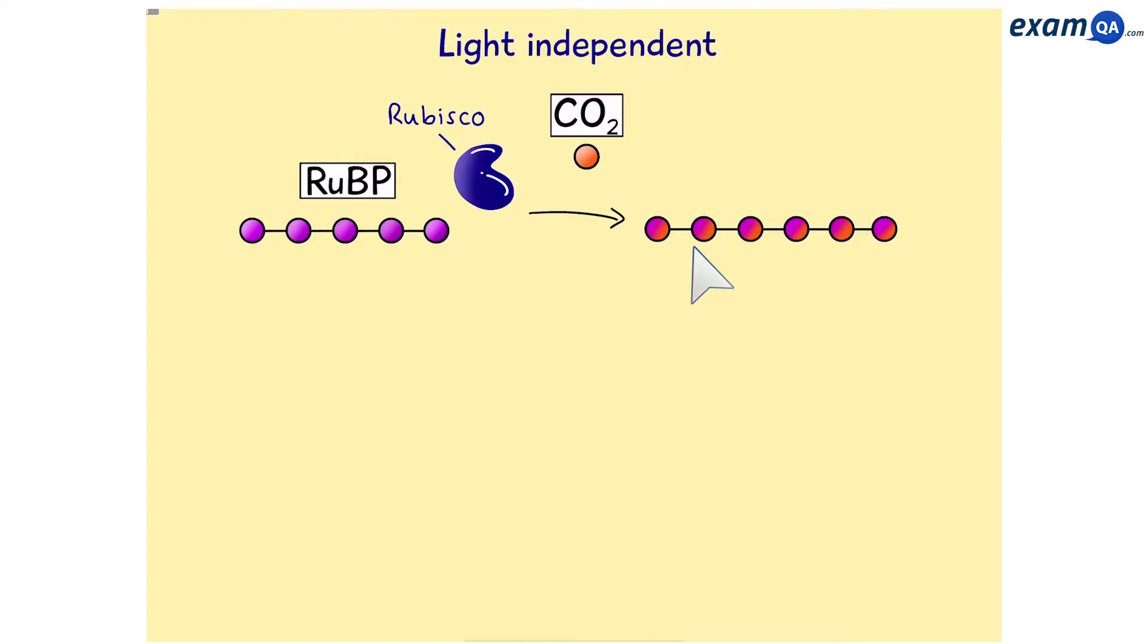Now this 6-carbon compound is not very stable, so it immediately breaks down into 2 3-carbon compounds. These are called glycerate-3-phosphate. We can call them GP. 6 carbons gave us 2 times 3 carbons.